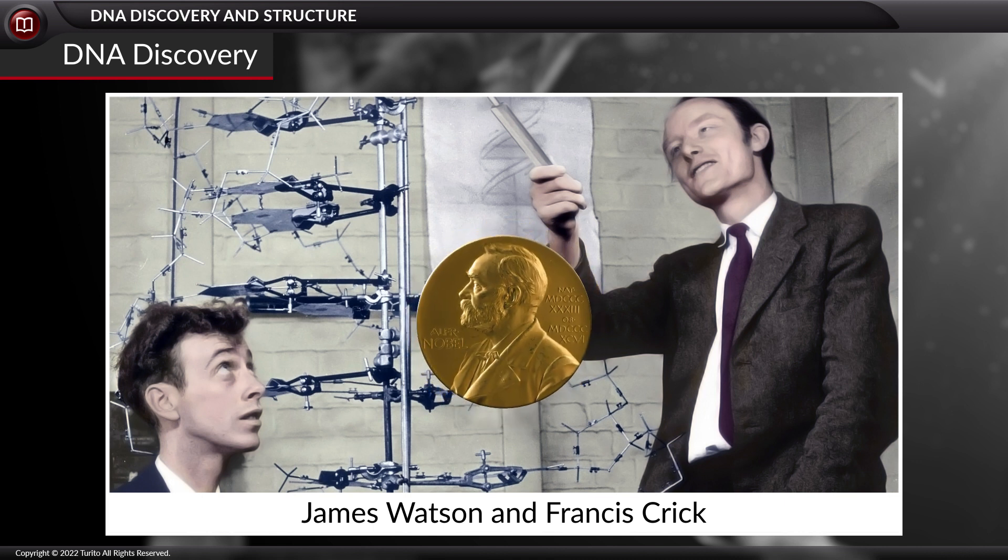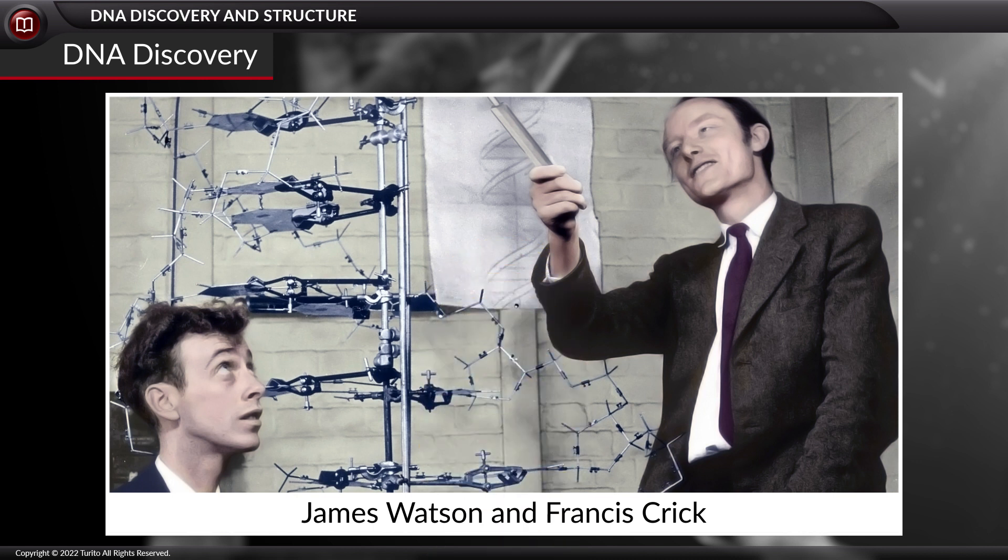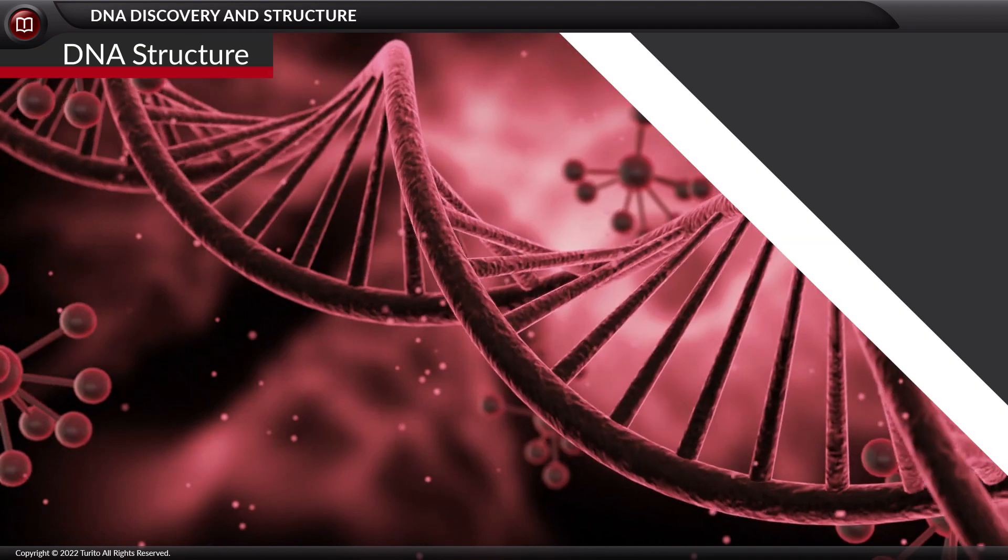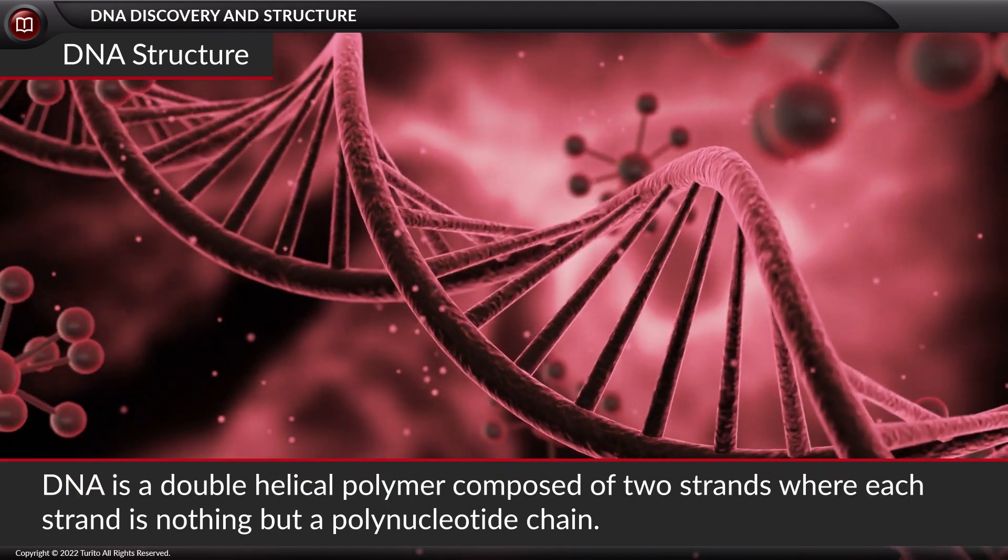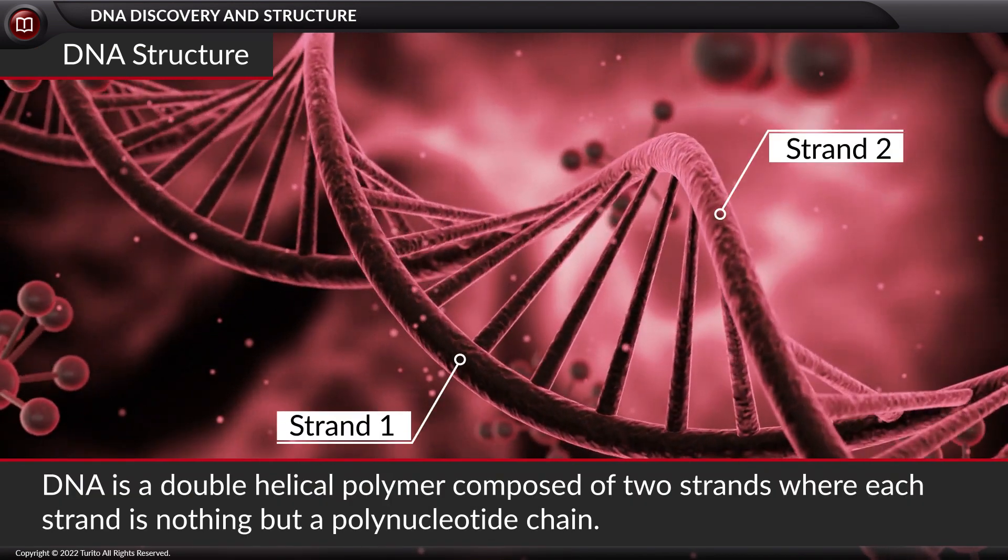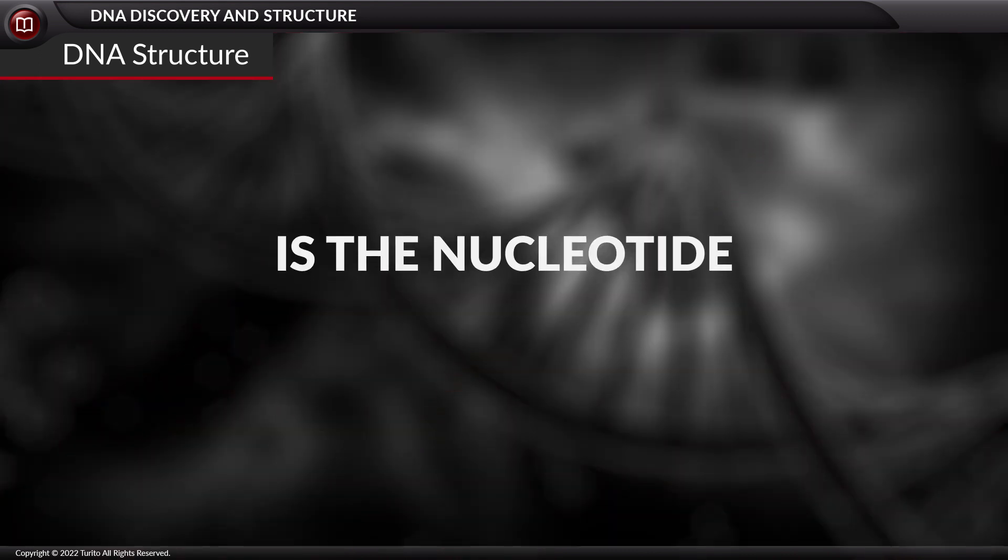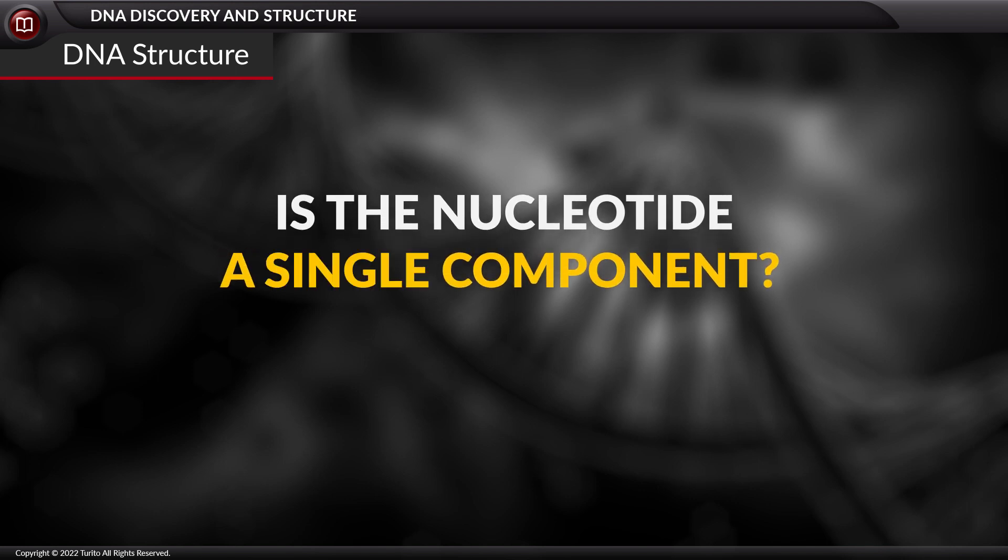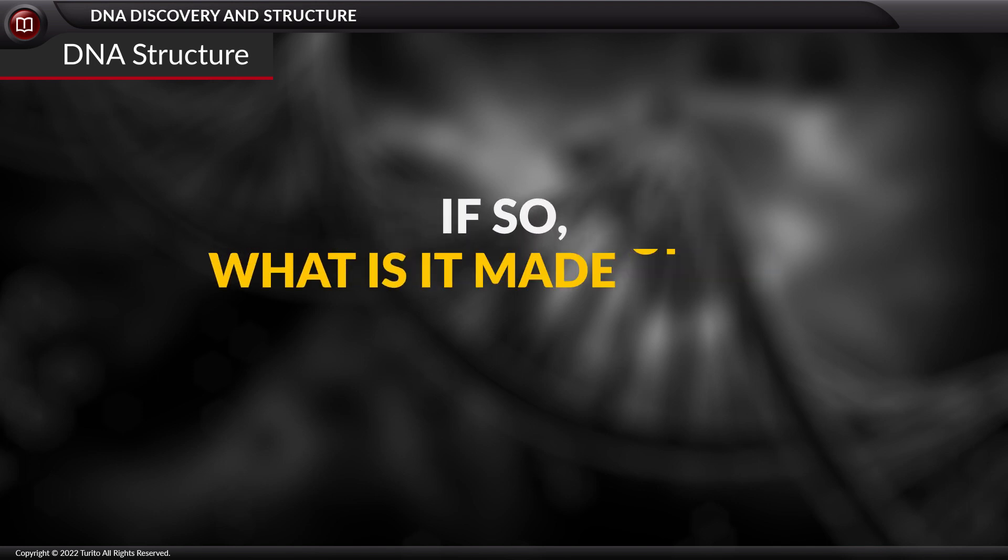Let us now discuss the Watson and Crick model of DNA. Structurally, DNA is a double helical polymer composed of two strands, where each strand is nothing but a polynucleotide chain. Is the nucleotide a single component? If so, what is it made up of?